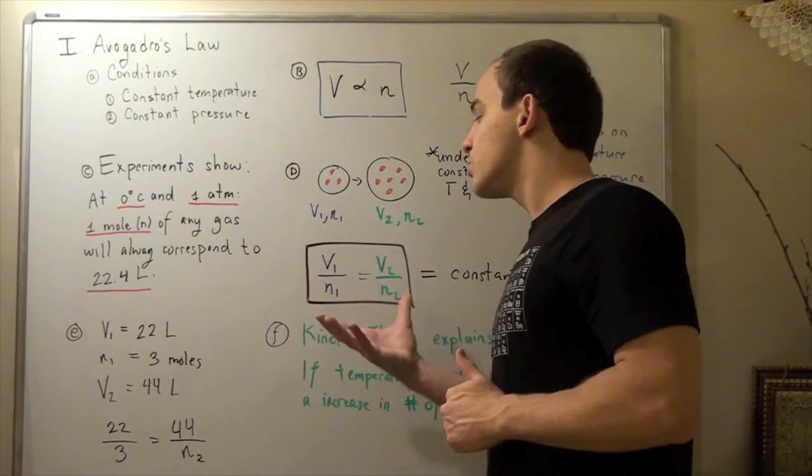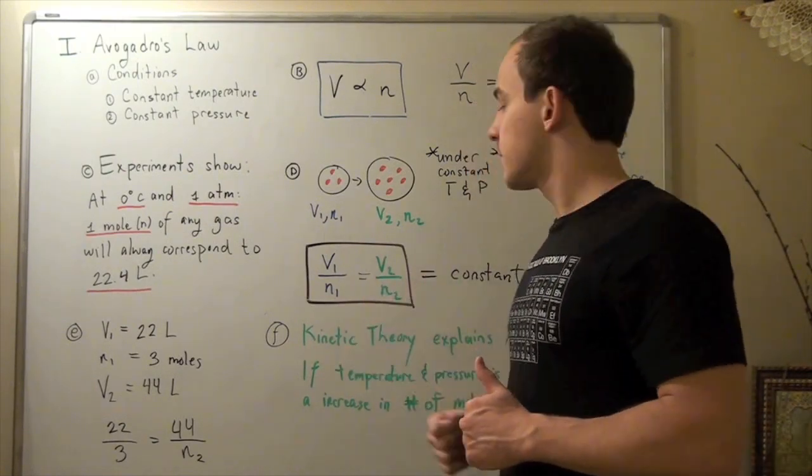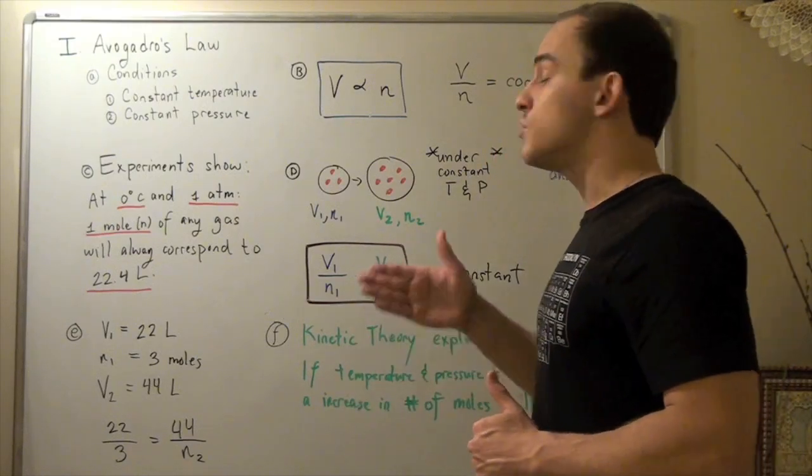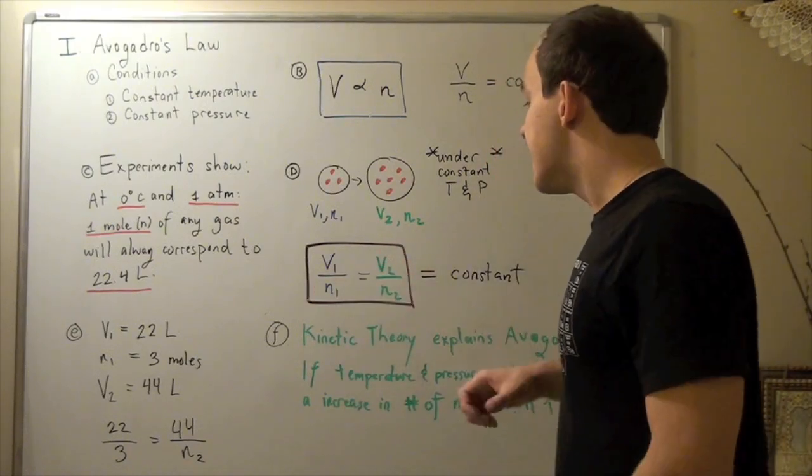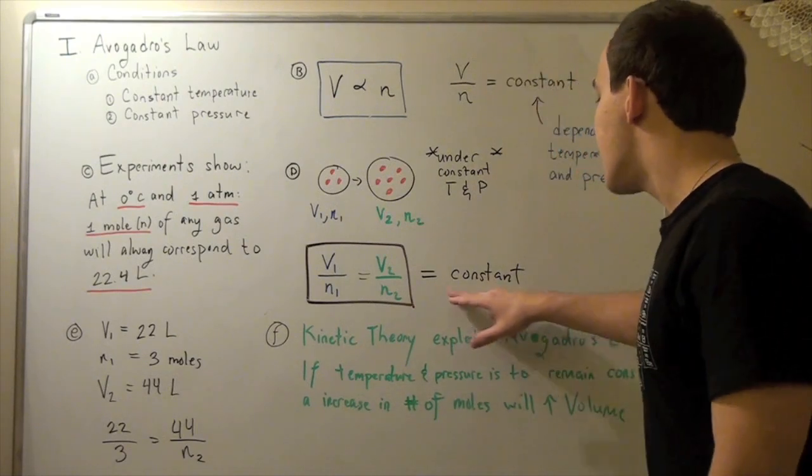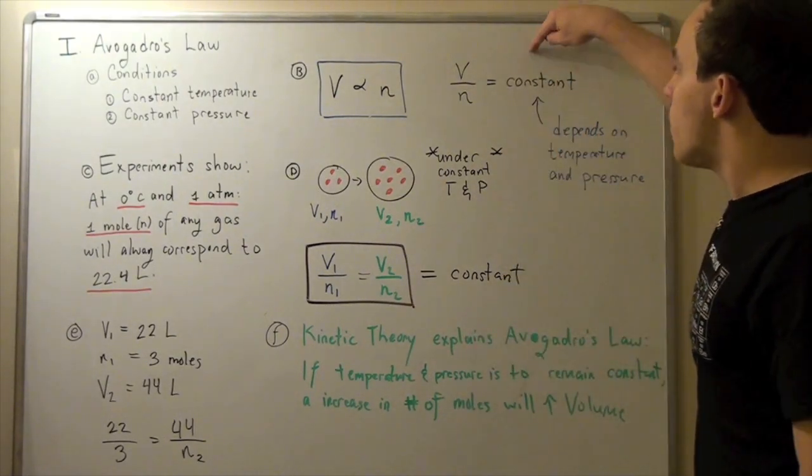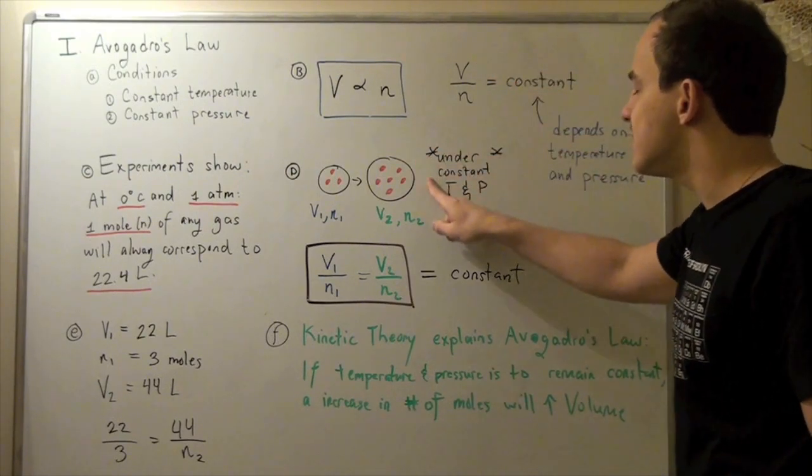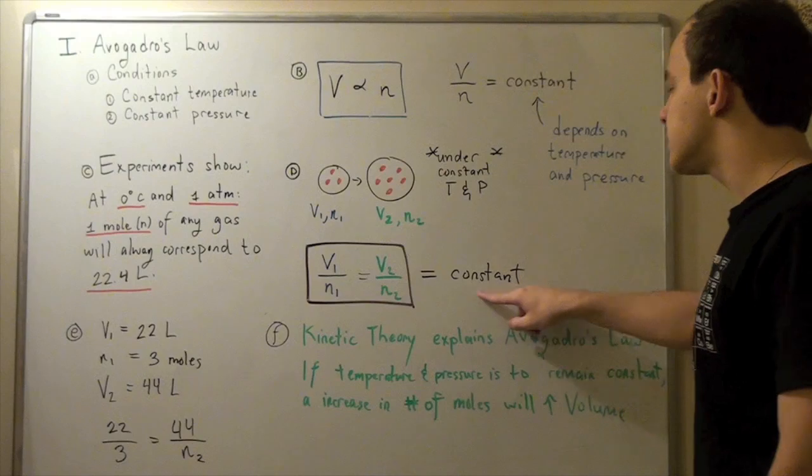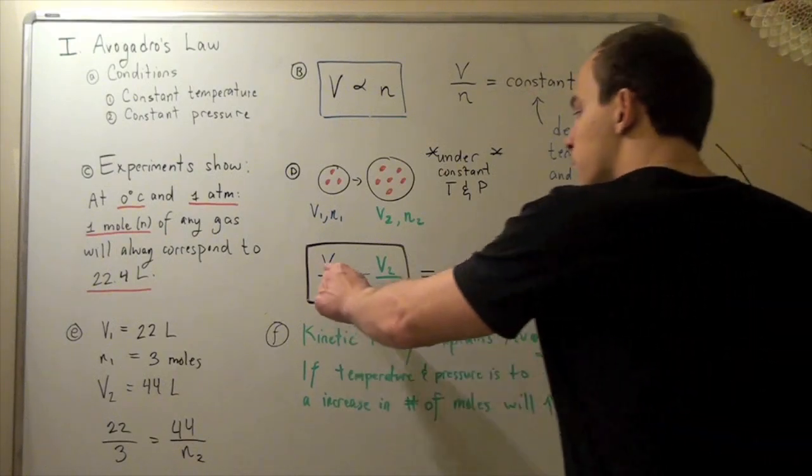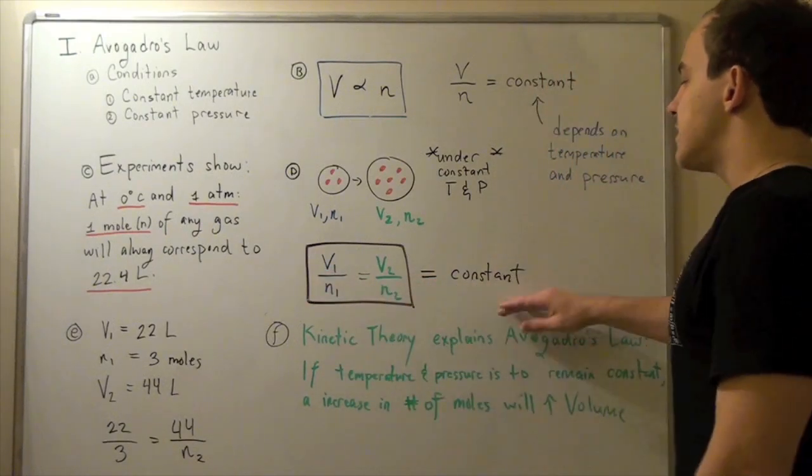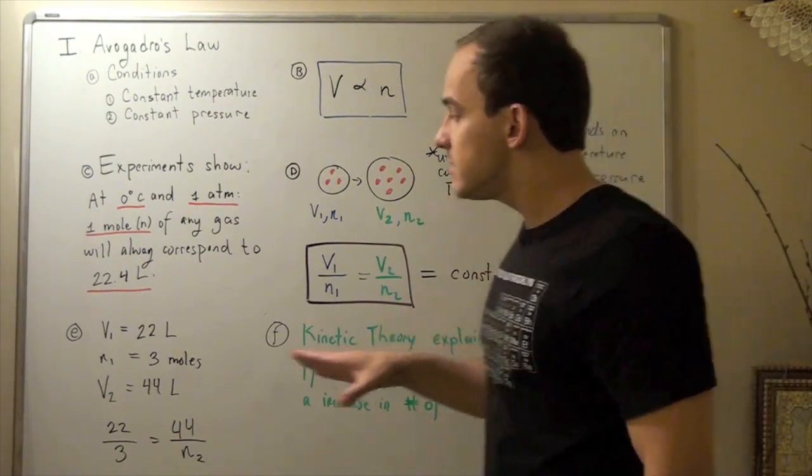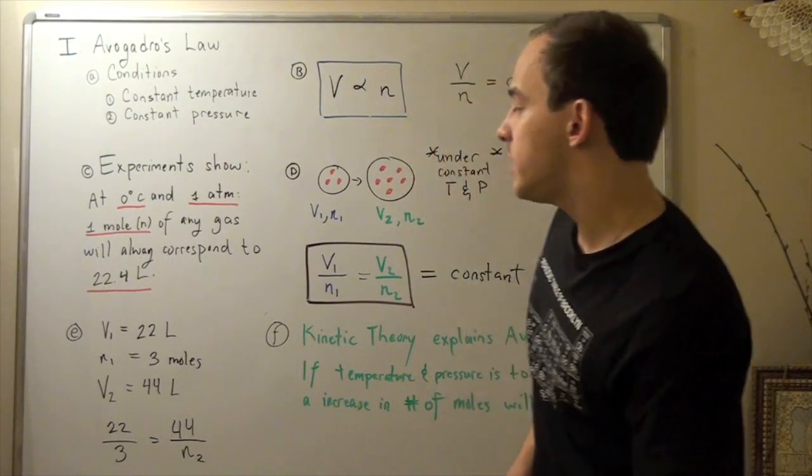The same thing, the same result we saw in Charles' law and also in Boyle's law. Except in Boyle's law it was P times V equals P2 times V2. Now this is equal to the constant because remember, no matter what volume or number of moles we're talking about, as long as this is true, our constant will be the same. So both sides equal the same constant. Now this formula can be applied in many different examples. Let's see one, an easy one, in part E.